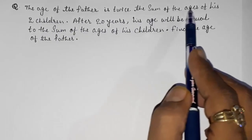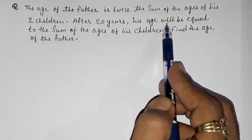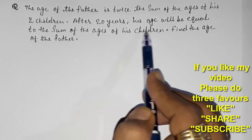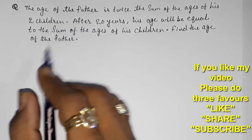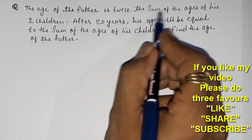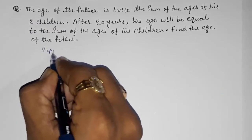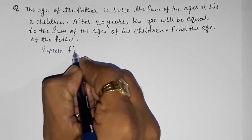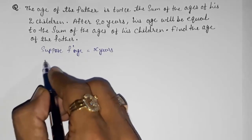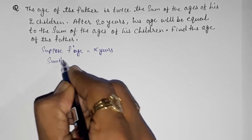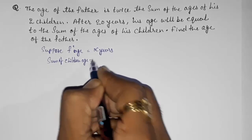Moving to question number 3: The age of the father is twice the sum of the ages of his two children. After 20 years, his age will be equal to the sum of the ages of his children. Find the age of the father. Suppose father's age equals x years and the sum of children's ages equals y years.